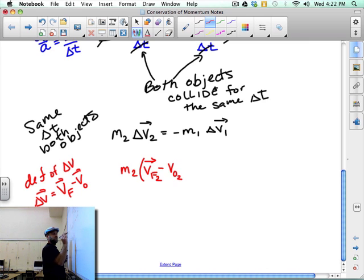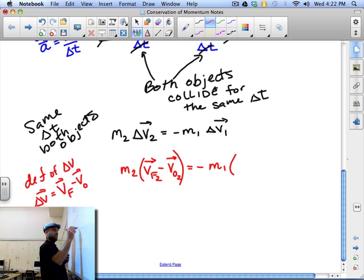has to equal negative m1. Then, let's see here, v final object 1, minus v initial object 1.